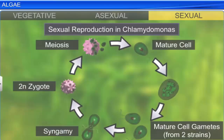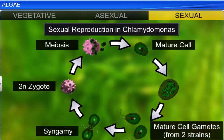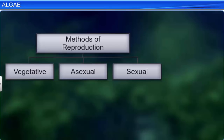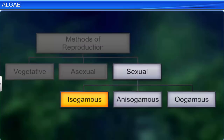During sexual reproduction, two gametes fuse to form a new organism. Based on the size of the gametes, sexual reproduction can be further divided into isogamous, anisogamous, and oogamous reproduction.